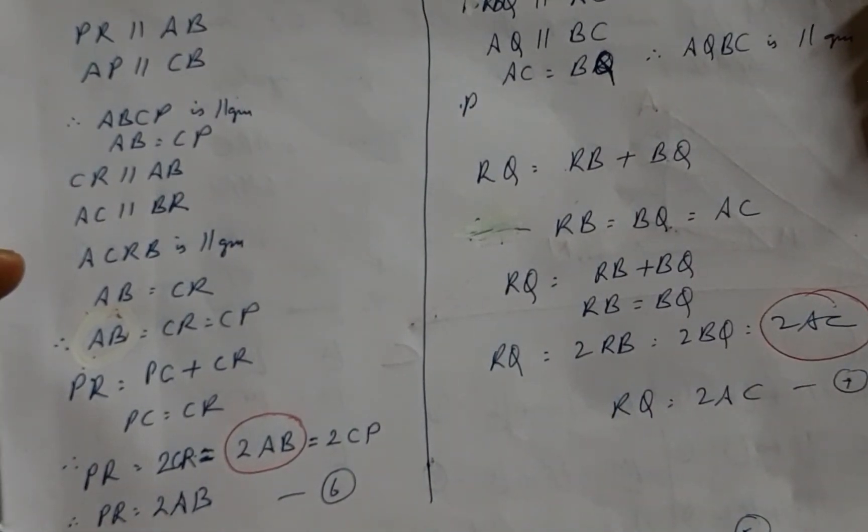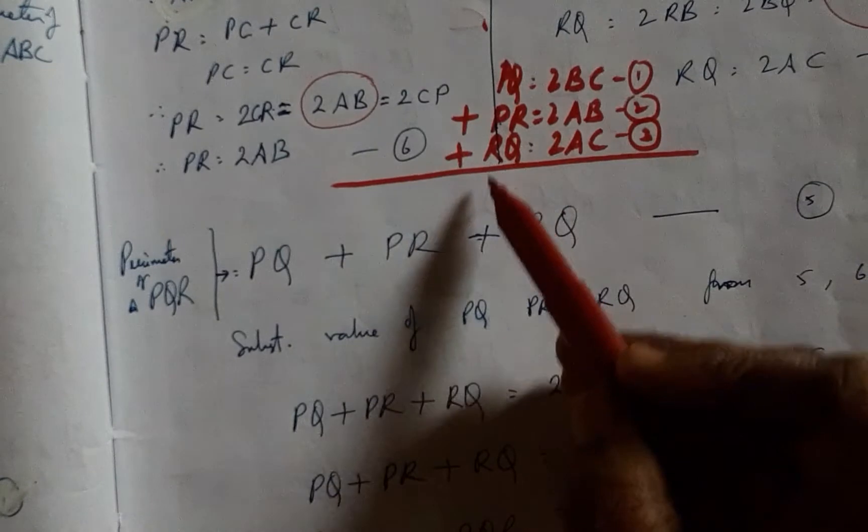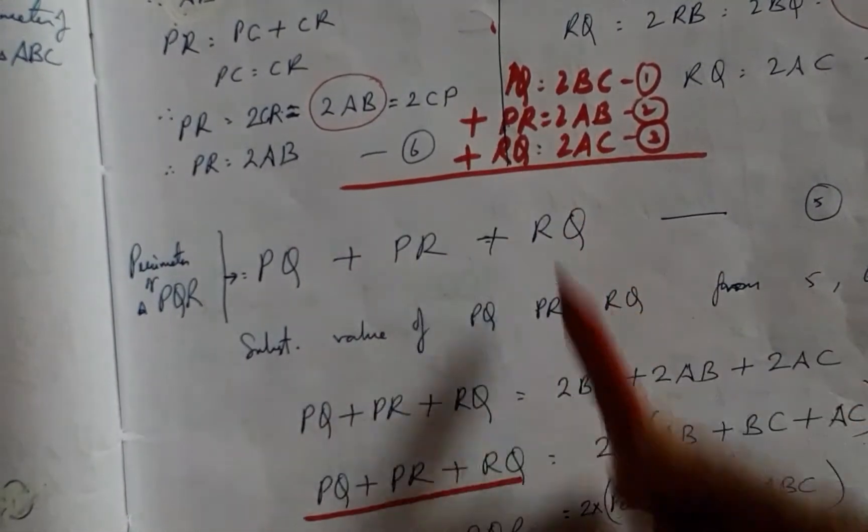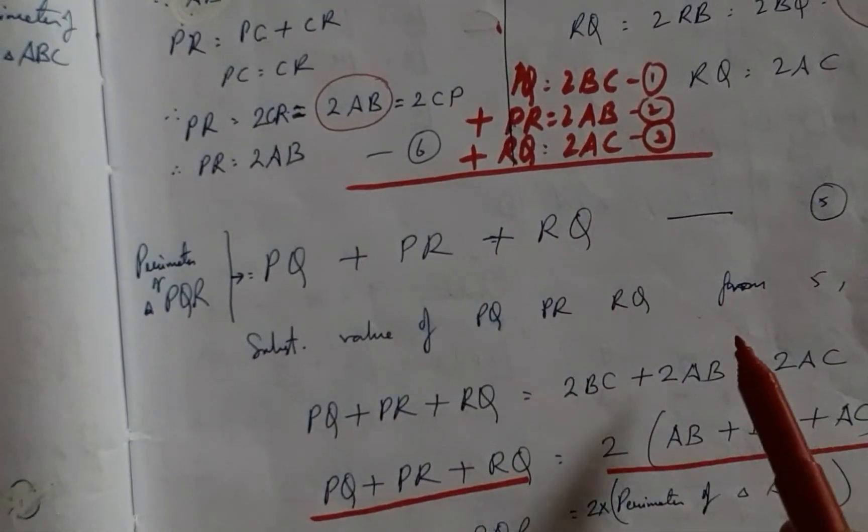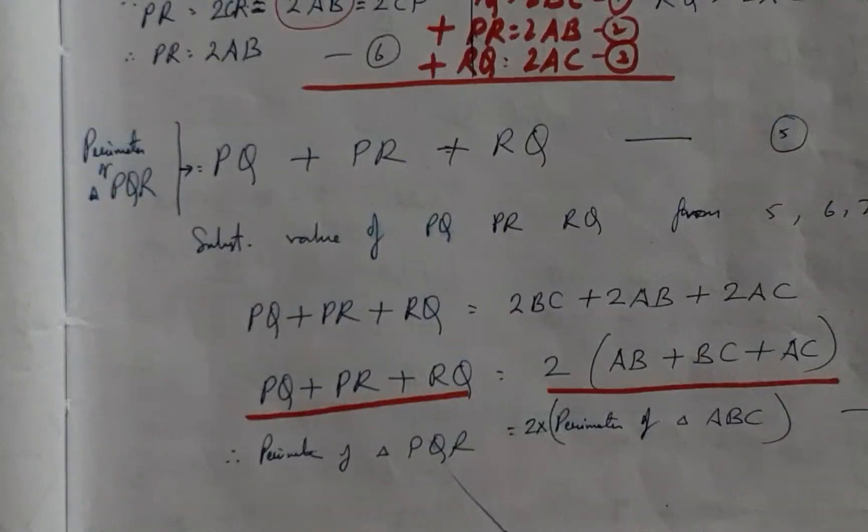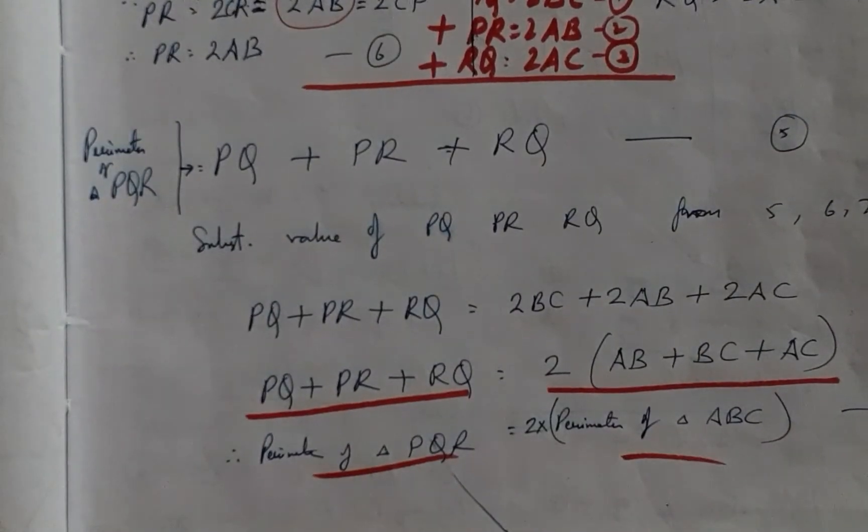Now adding these three equations, we have these three sides equal to twice of these three sides, which happens to be the perimeters of these two triangles.